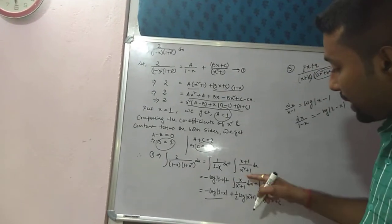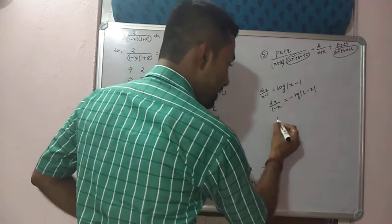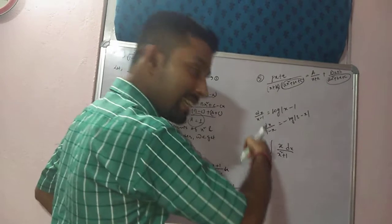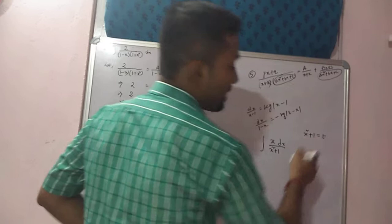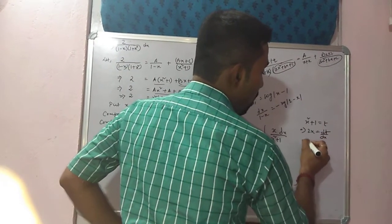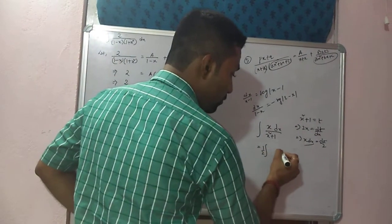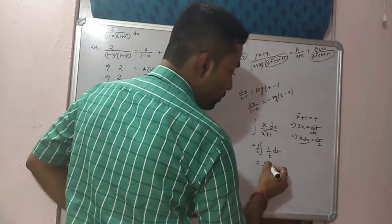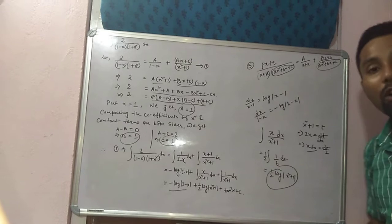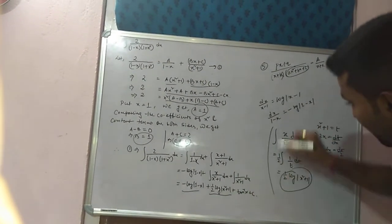For the second term (bx + c) by (x square + 1), since there is a plus sign between terms, write them separately: x by (x square + 1) plus 1 by (x square + 1). For the integration of x dx by (x square + 1), use substitution method — put the denominator equal to t, differentiation gives 2x = dt/dx, so x dx equals dt by 2. Then 1 by 2 times integration of dt by t gives (1/2) log modulus t, and substituting back gives (1/2) log modulus (x square + 1).